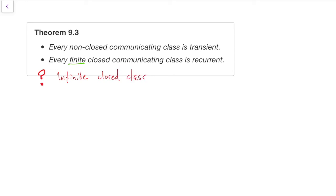There's only the question about infinite closed classes. Infinite closed classes can be either. So if you're ever unlucky enough that you find yourself faced with an infinite closed class, then you might actually have to do some work. But you don't see those very often. You normally see finite, closed, or non-closed classes, in which case you can tell straight away, dead easily, whether they're recurrent or transient.